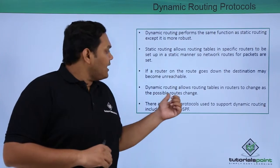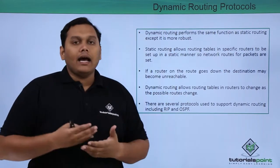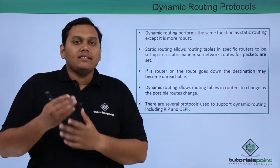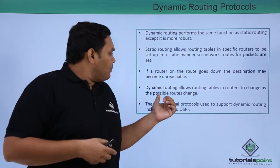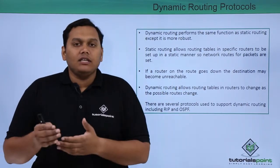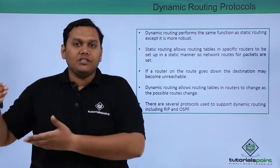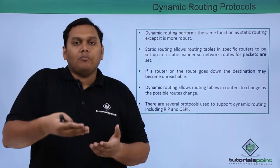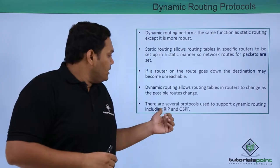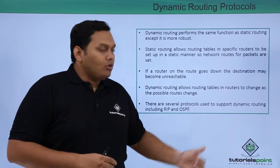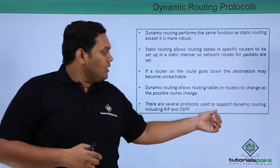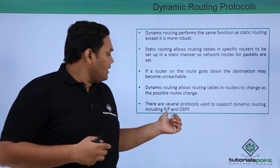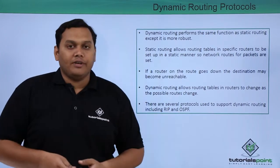For this reason, dynamic routing allows routing tables in routers to change as the possible routes change. That means when a possible route changes in the routing table, the routing table will get updated automatically and dynamically. There are several protocols used to support dynamic routing, and the main protocols are RIP and OSPF.